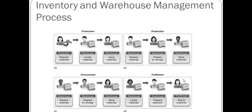Inventory and warehouse management is involved in many processes. During production, you request materials that may come from your inventory, so you check whether you have them and track what has been used. During procurement, you are bringing materials into your warehouse so the inventory or stock is replenished. During fulfillment, inventory and warehouse management is also involved because something is going out from your inventory.